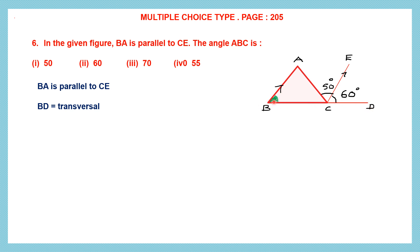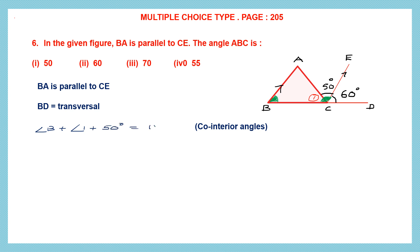The transversal is cutting the two parallel lines. That means angle B plus this angle — that is 50 degrees — plus a small part which we will name as angle 1. So if we add up 50 degrees and angle 1 and add angle B, they become co-interior angles and will be equal to 180 degrees.